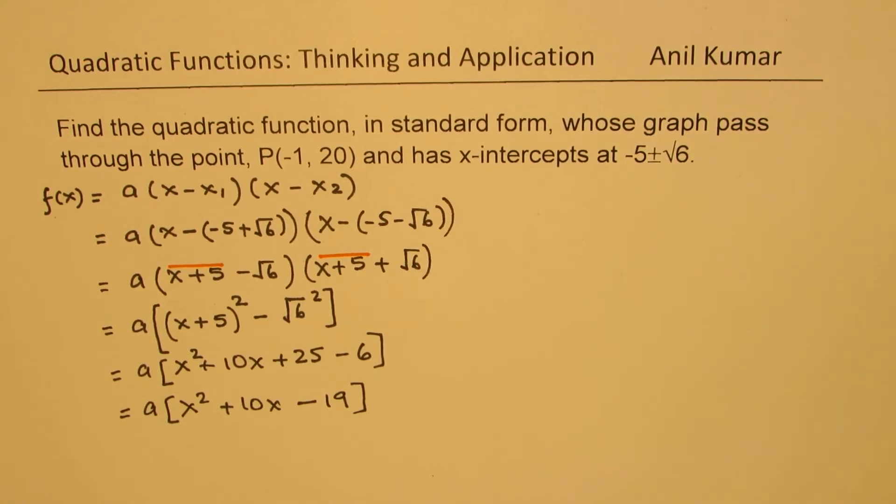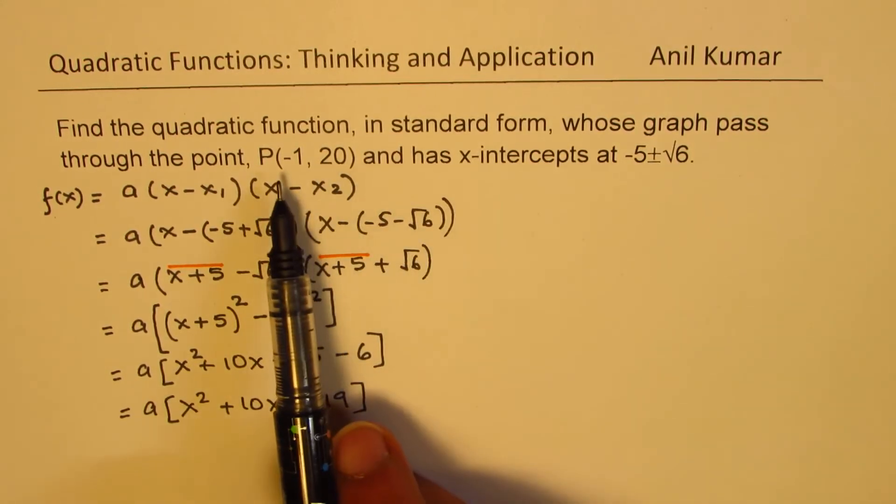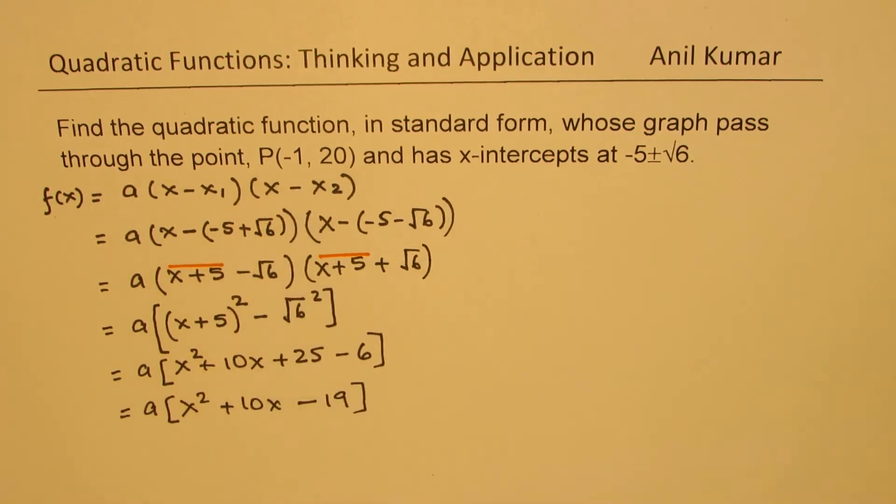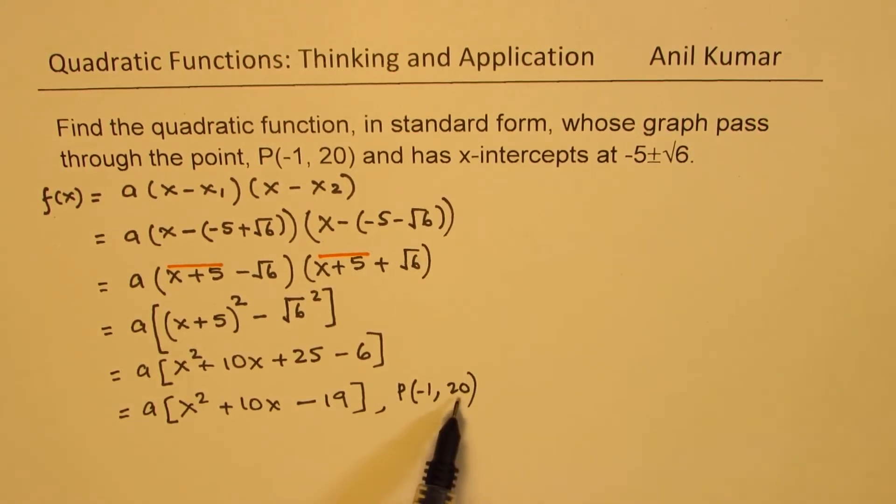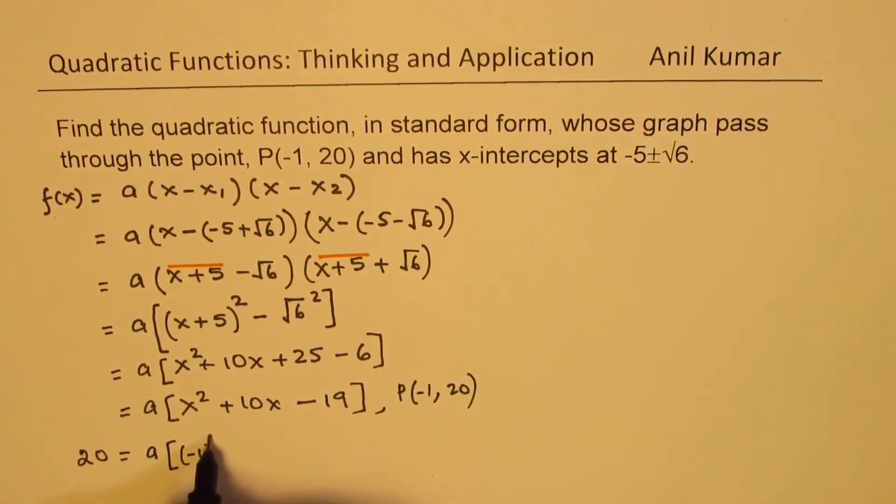Now, to find the value of a, we can utilize this point given to us, which is (-1, 20). So if I substitute the point, which is (-1, 20) in our equation, f(x) is 20, right?